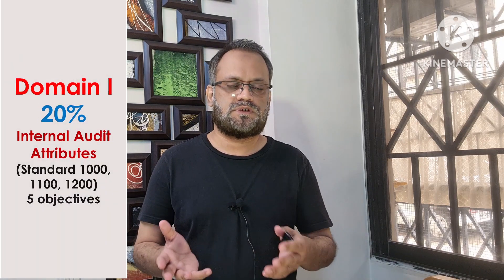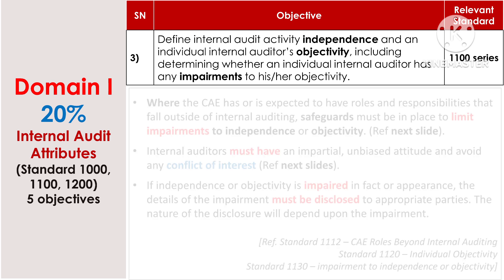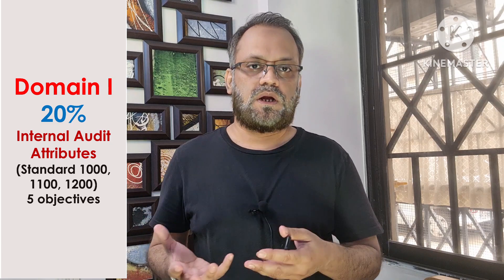Another part of the third objective is determining whether an individual internal auditor has any impairments to objectivity. Internal auditors must have an impartial, unbiased attitude and avoid any conflict of interest. If independence or objectivity is impaired in fact or appearance, the details of the impairment must be disclosed to the appropriate parties. The nature of the disclosure depends upon the impairment, and ultimately the appropriate parties are the board of directors or audit committee and top management.